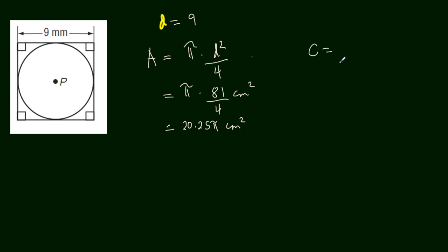The circumference is, we have the diameter multiplied by pi. Then we have the diameter, not centimeter, millimeter. 9 pi millimeter.